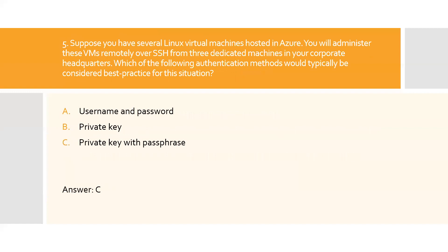Question five: Suppose you have several Linux virtual machines hosted in Azure. You will administer these virtual machines remotely over SSH from three dedicated machines in your corporate headquarters. Which of the following authentication methods would typically be considered best practice? A) Username and password, B) Private key, C) Private key with passphrase. Option C is the right answer. Private key access with a passphrase is the most secure option — even if an attacker acquires your private key, they will be unable to use it without the passphrase.